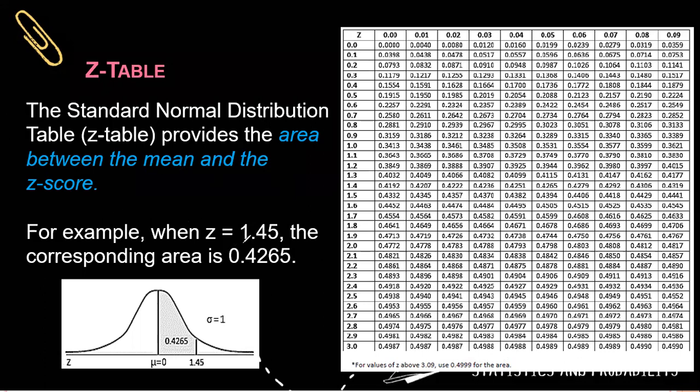So for example, when Z is 1.45, you simply look at 1.4 and then look at 0.05. And then their intersection is 0.4265. So that is the corresponding area. And when you graph it, located is 0, and then we have 1, 2, and so on, 3.